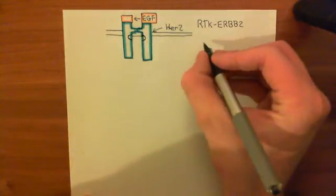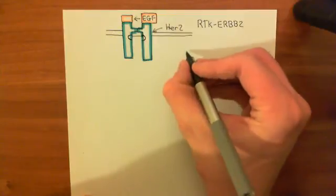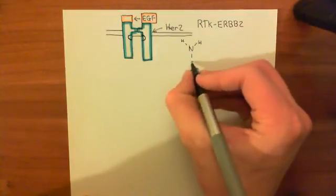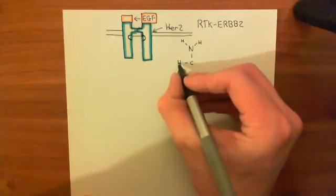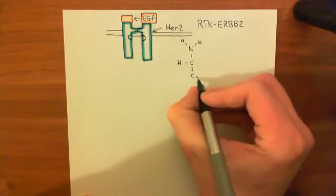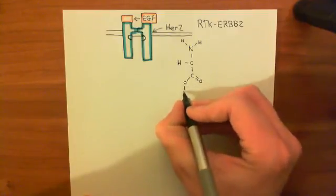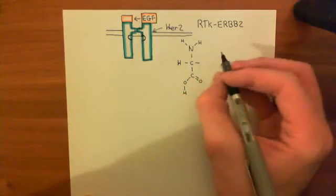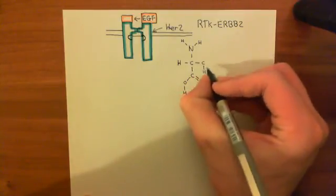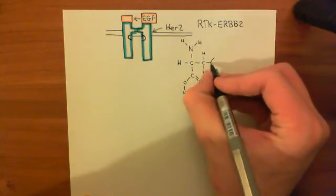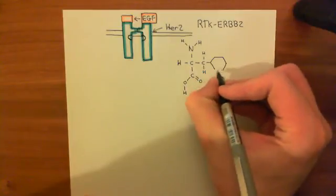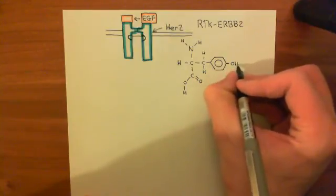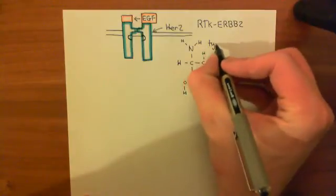Let's quickly remind ourselves of the structure of the tyrosine amino acid. The amino acid tyrosine has the basic amino acid structure: the amino group, the alpha carbon with its hydrogen, and the carboxylic acid group. The R group specific to tyrosine consists of a methylene group, followed by a benzene ring, and then off the fourth carbon of the benzene ring — directly opposite the methylene — there is a hydroxyl group. That's the structure of the amino acid tyrosine.